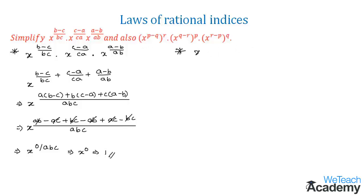Here we have x power p minus q whole power r into x power q minus r whole power p into x power r minus p whole power q. So this we can write as x power, and let us multiply r to the power p minus q into x power p into q minus r into x power q into r minus p.